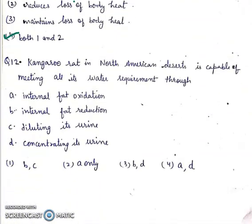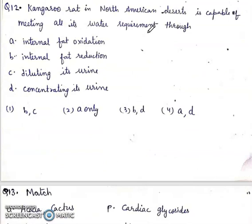Question 12: Kangaroo rat in North American deserts is capable of meeting all its water requirement through A, internal fat oxidation; B, internal fat reduction; C, diluting its urine; D, concentrating its urine. Right answer will be fourth, both A and D.